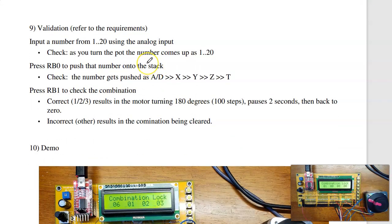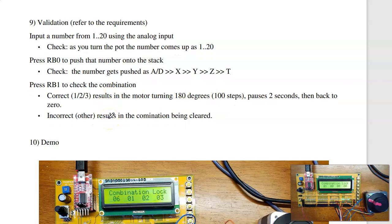Validation is go back to the requirements. Whatever's in the requirement belongs in the validation. I input the numbers 1 to 20. That works. I want to hit RB0, the numbers get pushed on the stack. That works. A correct combination causes the motor to open, pause, then go back. Incorrect combination does nothing.